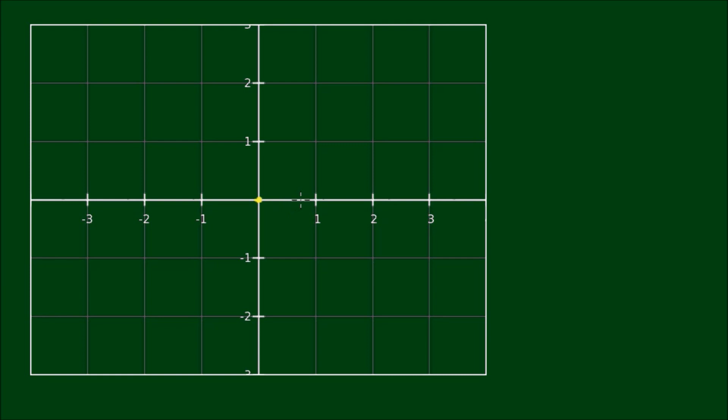Alright, so on our chart here we have the focal point located at the pole. The vertex is located along the polar axis at a distance of 3 quarters. So let's say 3 quarters is about here, so let's label this as R theta equals 3 quarters, zero. And this is the vertex.